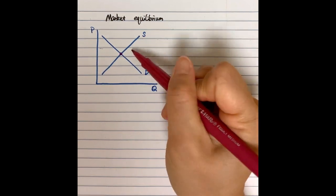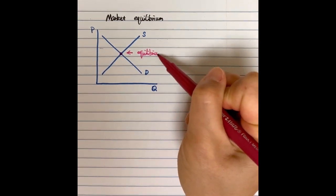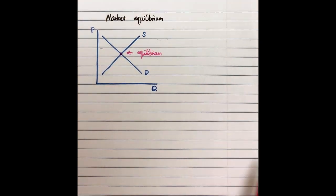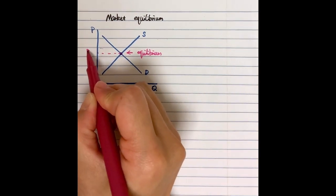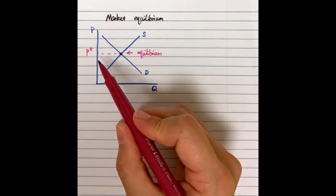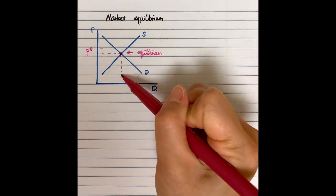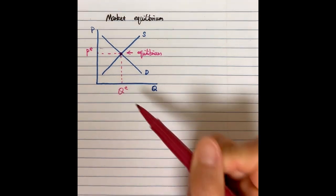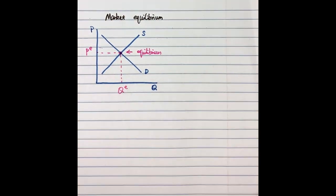I mark it here — this will be our equilibrium point. For the market equilibrium price, we denote it as P superscript E. We can also find out the market equilibrium quantity at Q superscript E.